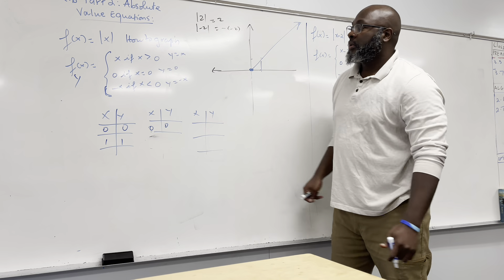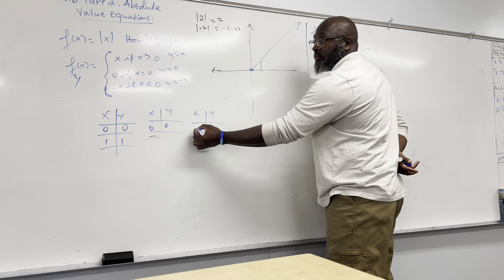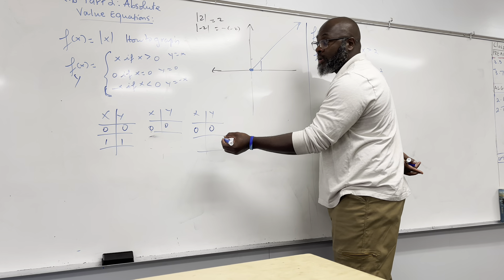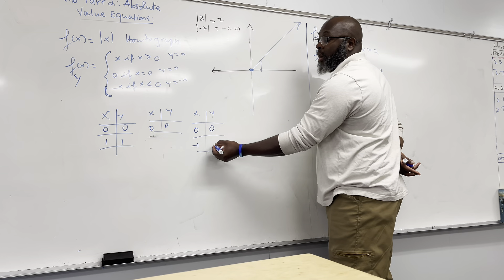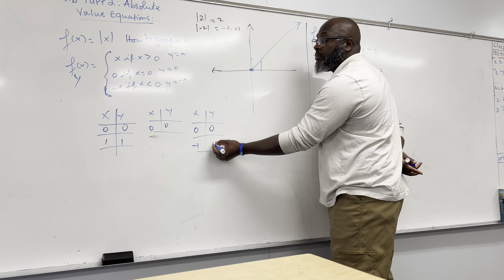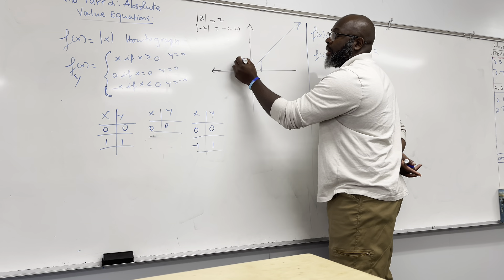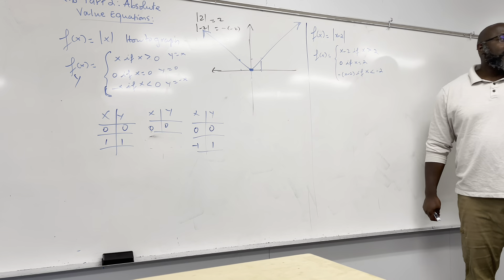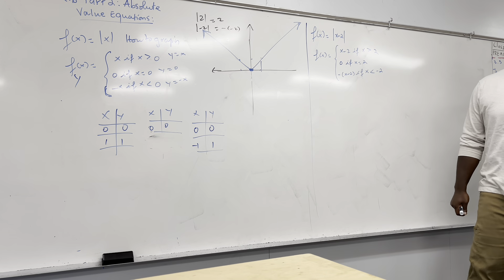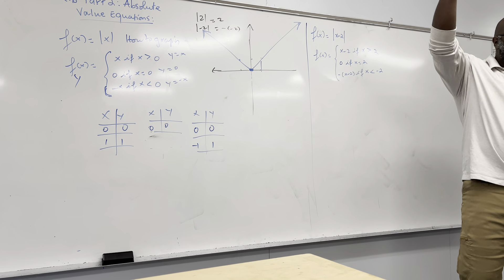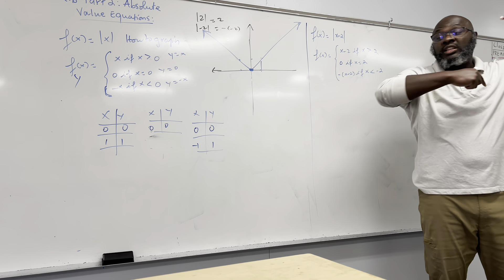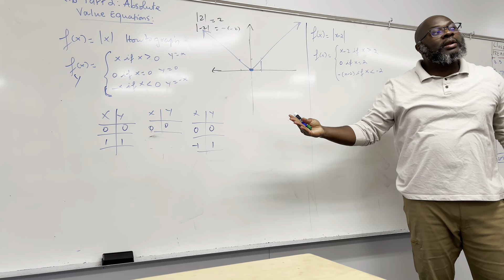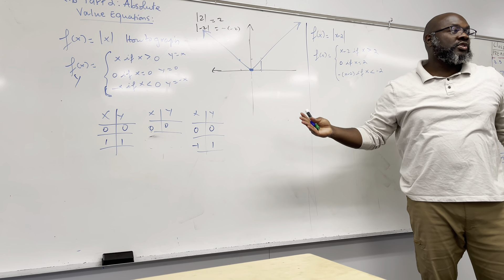Now for the third table, when x is 0, y is negative 0, which is 0. And when x is negative 1, y is negative negative 1, which is positive 1. So we have: (0, 0) and (-1, 1). And look — this is the absolute value function. It's a beautiful function if you know how to build it correctly. It's always going to look like a V or a reversed V depending on what we have. This example is simple, but I'm going to do another one so we understand how to build this function.